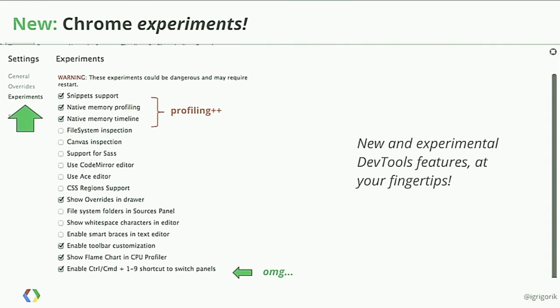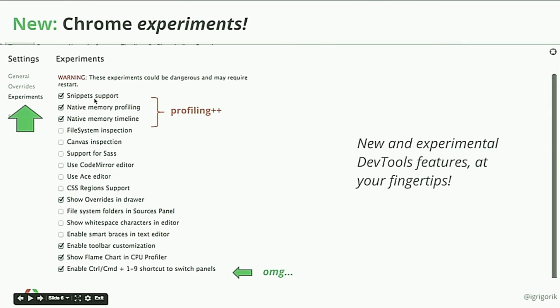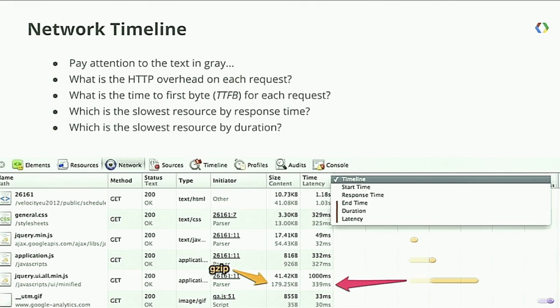The second tip is new in Chrome Canary — the experiments tab. Previously you had to go to about:flags to enable different things. Now it's much easier: you go to Experiments and find lots of awesome stuff, like support for Sass and CodeMirror. One of my favorites lets you toggle between all DevTools panels using Command-1, Command-2, etc. — I continually toggle between timeline and network view, and it saves me a ton of time. Snippets are also in there, which I'll show in a second.